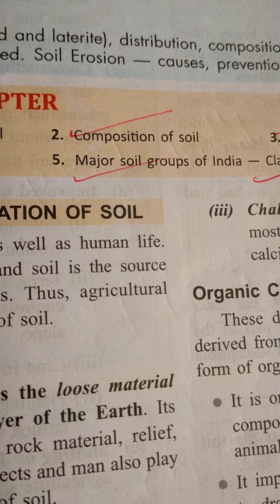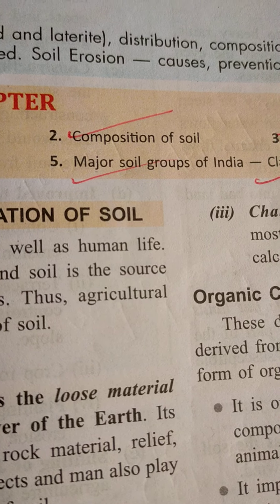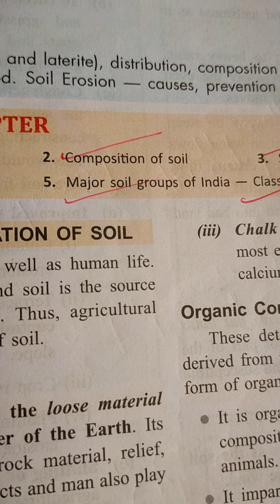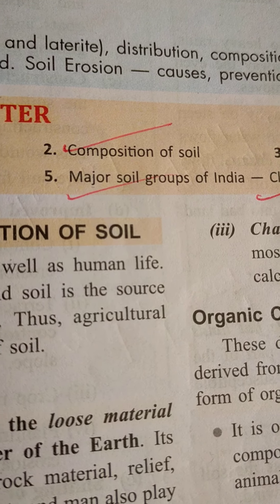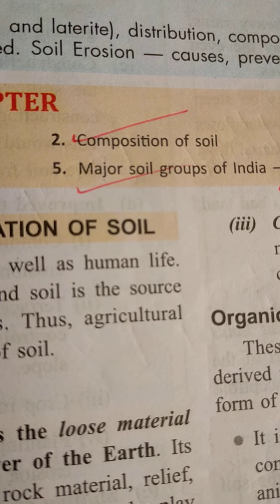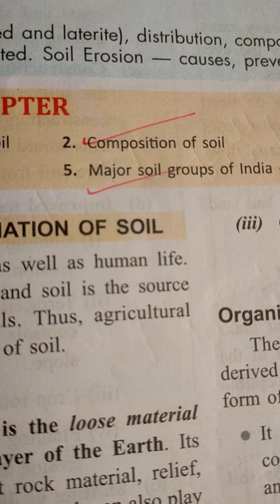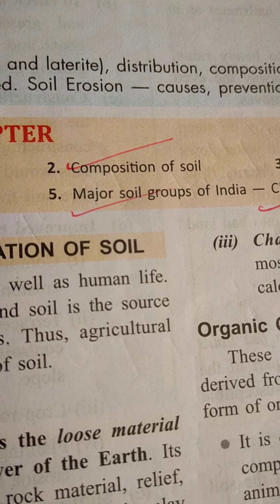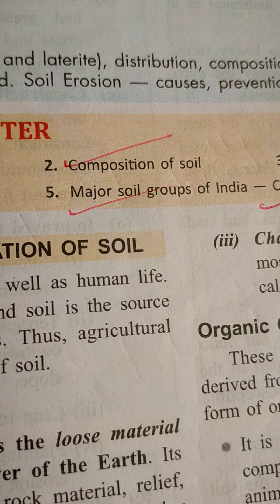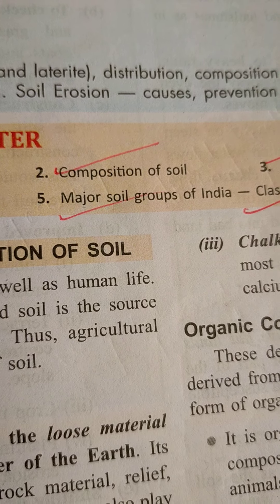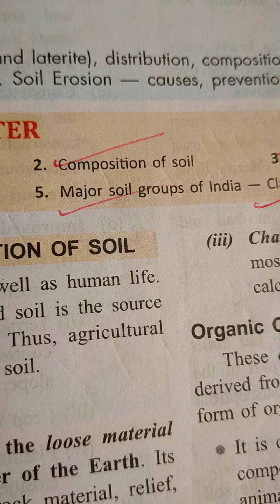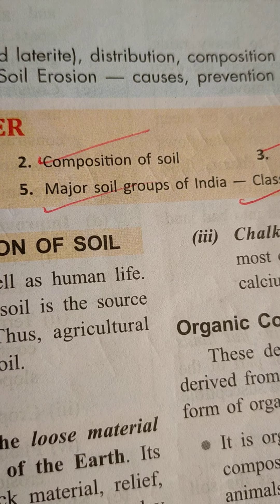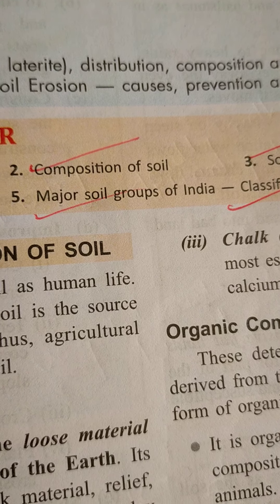Soil supports plants, animals, and human life. People depend on the food they eat, and soil is the source of that food for man and animal. India is an agricultural country, and agricultural production depends on the fertility of the soil. We get cloth from fiber grown in the soil. Soil not only provides food and clothes — it also supplies material for buildings, houses, and minerals for industrial development. Hence, soil is the most significant natural and basic resource for the development of our country.